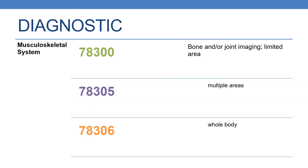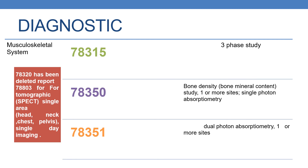Now coming to the nuclear medicine codes for musculoskeletal system. The first CPT is 78300, which deals with bone and/or joint imaging, limited area. The next code is 78305, which deals with bone and joint imaging, multiple areas. The next code is 78306, which deals with bone and/or joint imaging, whole body. For limited area use 78300, for multiple areas use 78305, and for whole body use 78306. The next code is 78315, which deals with bone and joint imaging study, three-phase study.